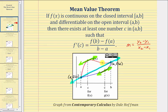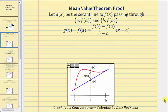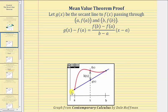And now let's prove the mean value theorem. To begin our proof, we'll let g of x be the secant line to f of x passing through the two endpoints in the closed interval from a to b, so the two endpoints would be a comma f of a and b comma f of b. So g of x is this secant line here.